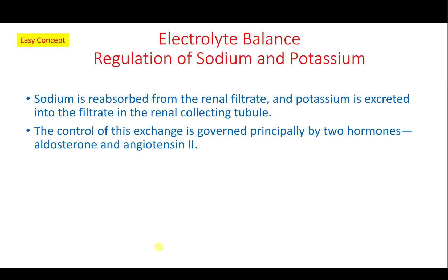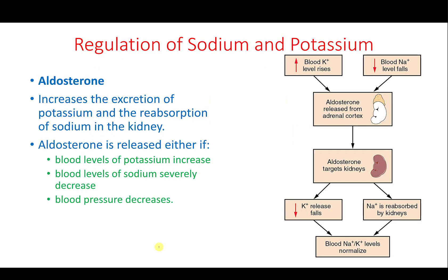For our purposes, what we need to understand is how the body maintains homeostasis of sodium and potassium, mainly through aldosterone — a mineralocorticoid from the adrenal cortex. In cases of low blood sodium or high blood potassium, aldosterone is released and targets the DCT of the kidney tubules, asking it to reabsorb sodium and release potassium into the urine, restoring the sodium-potassium balance.